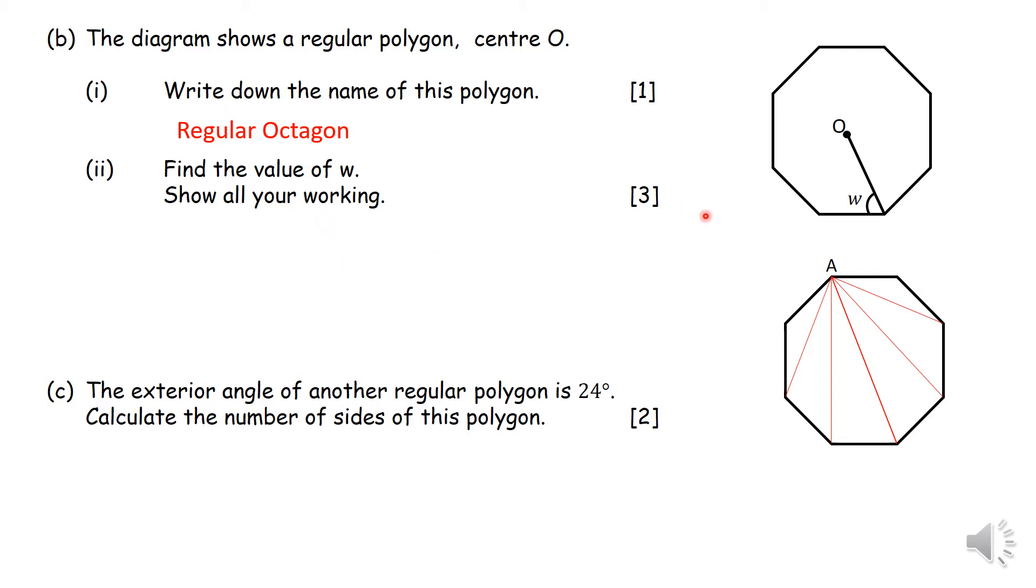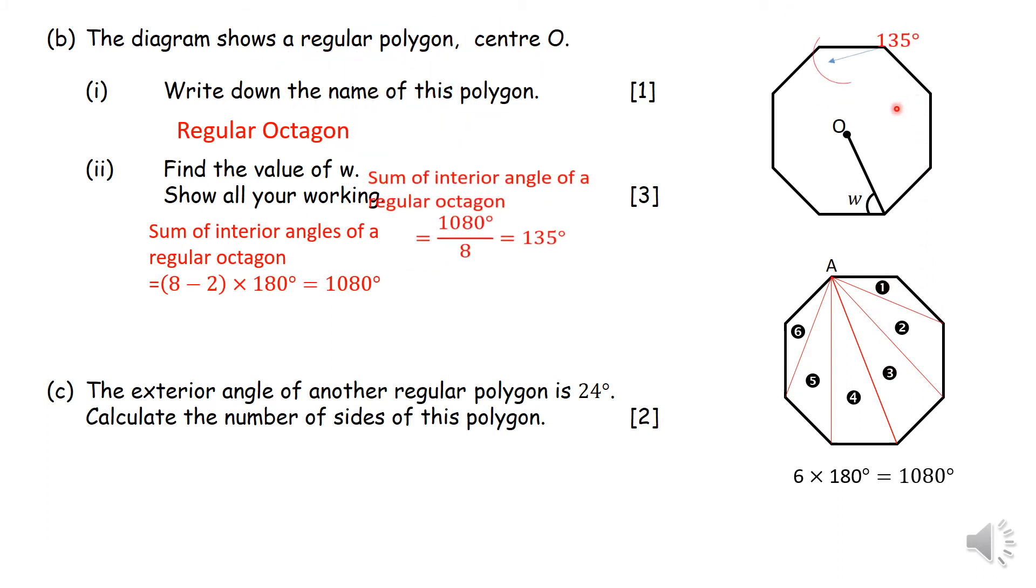Now we're supposed to find the value of W here. So what I did is I drew the same diagram and I made triangles by drawing from one vertex. You realize that I have six triangles. And if you know that the interior angles of one triangle is 180, so all these six triangles, their angles will add up to 1080. So therefore, if you want to find one angle, each interior angle, you will simply divide by the number of sides or the number of angles. So that is 135 degrees there.